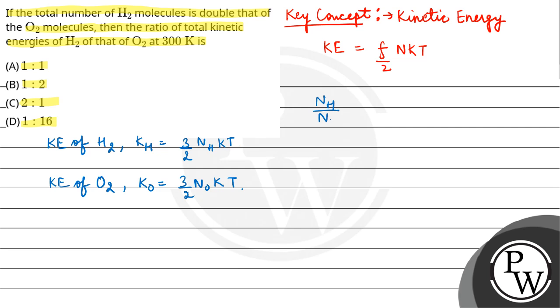is double of total number of molecules of oxygen. So KH upon KO will be equal to what? NH upon NO, which is equal to 2:1. So you have kinetic energy ratio of hydrogen to oxygen that is equal to 2:1.